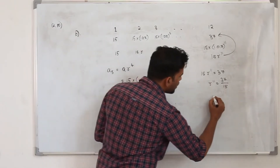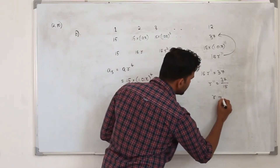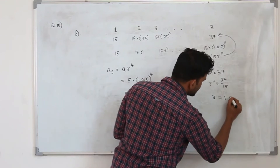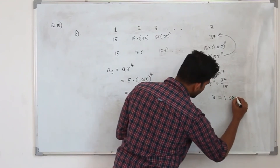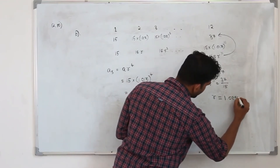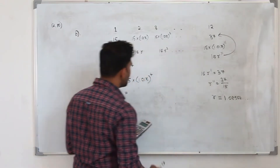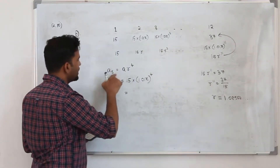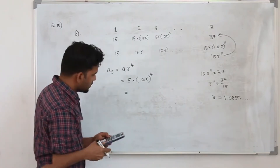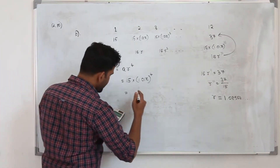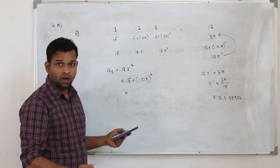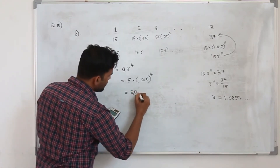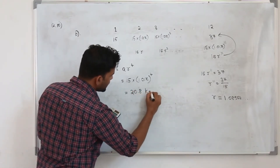The value of r is approximately 1.08554. So the 5th term is r to the power 4 multiplied by 15, which gives approximately 20.829 km. Rounded to 1 decimal place, that's 20.8 km — the distance covered by him in week 5 under training plan B.